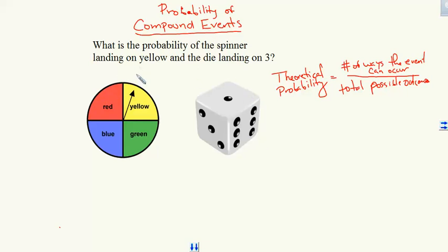Since this probability is not going to be based on any previous results, I know that I'm going to be finding the theoretical probability. So the number of ways the event can occur to the total possible outcomes.